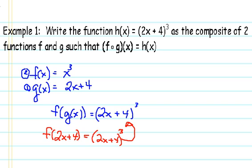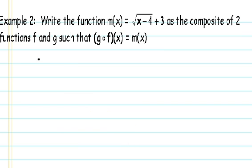Let's try this again with another example. In our second example, example 2, we're asked to write the function m of x equals the square root of x minus 4 plus 3 as the composite of two functions f and g, such that g circle f of x equals m of x.